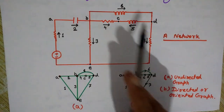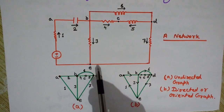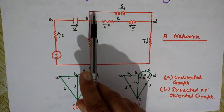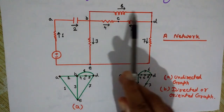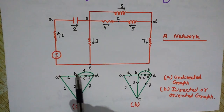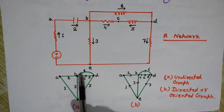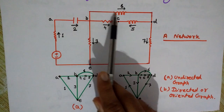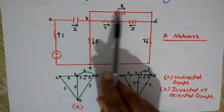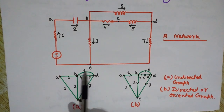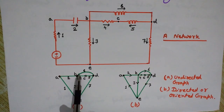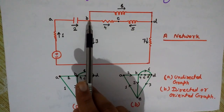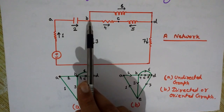So a graph is a collection of nodes and branches. What are branches? As you can see here, branch number six is just a simple line. We represent the components by simple lines — straight lines or curved lines — and these are called the branches.